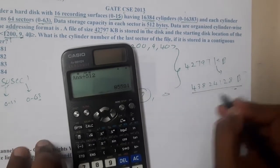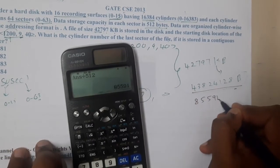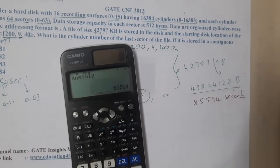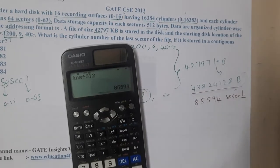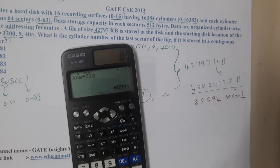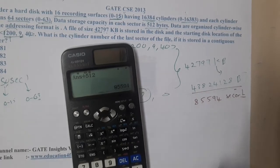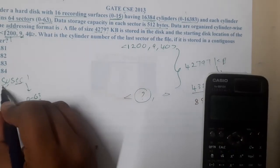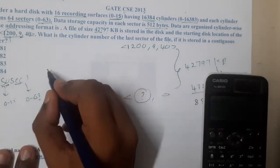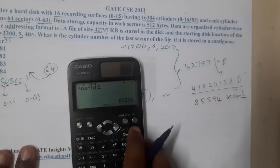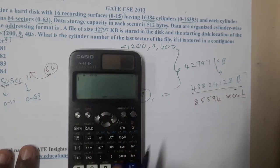We need 85,594 sectors to store this amount of data, since one sector is 512 bytes. Now, how many sectors are in one surface? There are 64 sectors per surface. So how many surfaces do we need? That is 85,594 divided by 64.